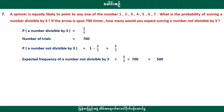A spinner is equally likely to point at any of the numbers. The number is chosen at random. The probability of getting a number divisible by 3 is 2 by 7.